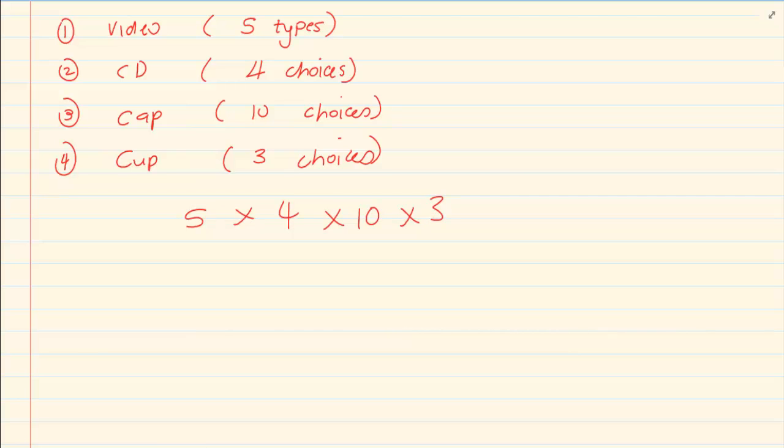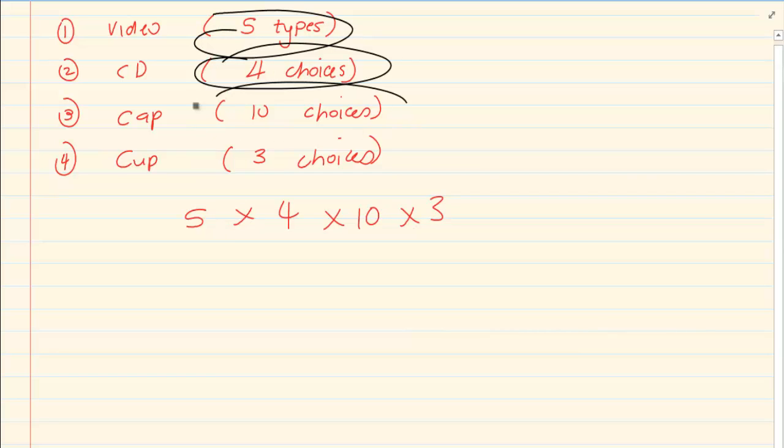So what I'm doing is I'm taking each choice and I'm multiplying them by the next. So I'm saying five times four, which is 20, 20 times 10, which is 200, 200 times three, which is 600. So you have 600 choices.